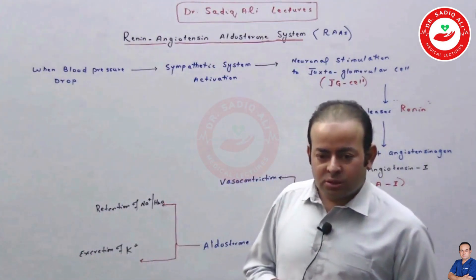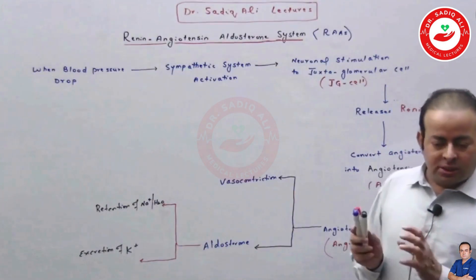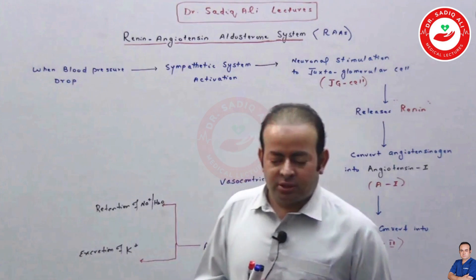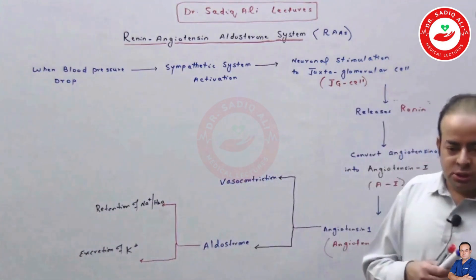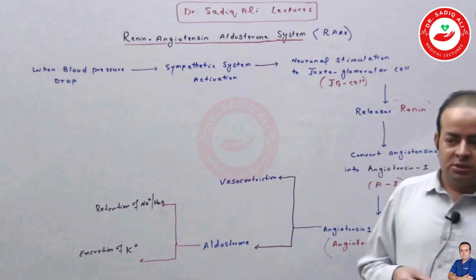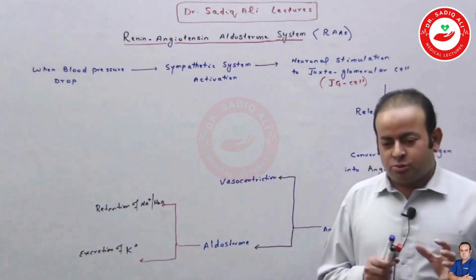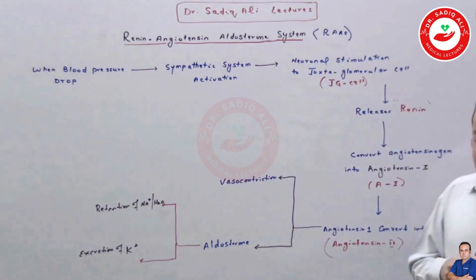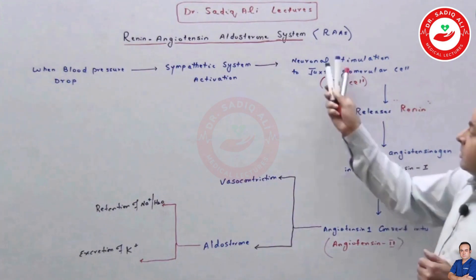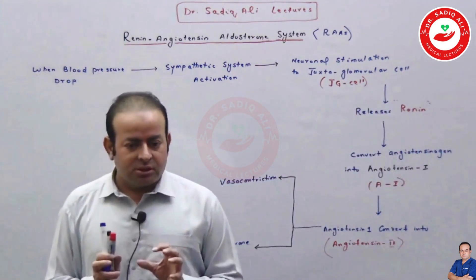Assalamualaikum, Bismillahirrahmanirrahim. This is Dr. Sadiq Ali from Dr. Sadiq Ali Lectures, again with a very important topic. Last time I uploaded on YouTube the dexamethasone suppression test — to differentiate Cushing's disease from Cushing's syndrome and ectopic cortisol. Many students loved that topic. Some students requested that I upload lectures on the Renin-Angiotensin-Aldosterone System, which is called RAAS. So today we will discuss what RAAS means and its significance in the body.